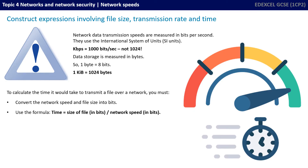To calculate the time it would take to transmit a file over a network, you must first convert both the network speed and the file size into bits, and then use the formula: time taken equals size of the file in bits divided by the network speed in bits.